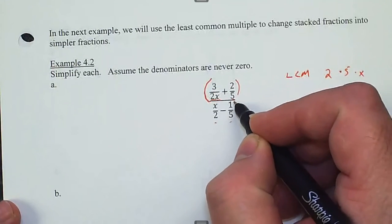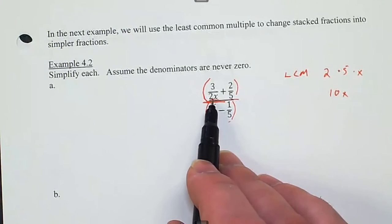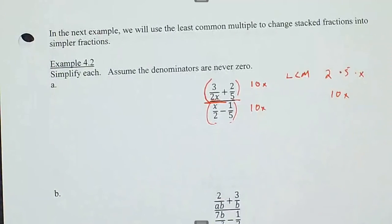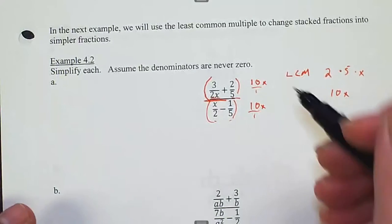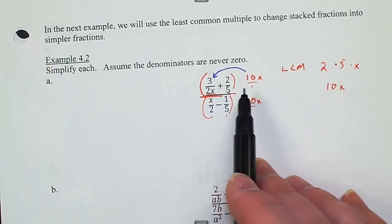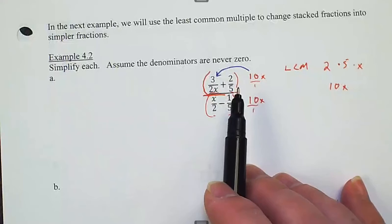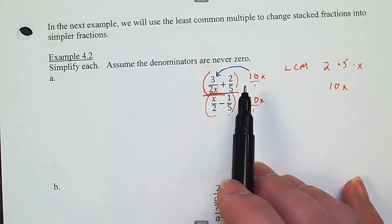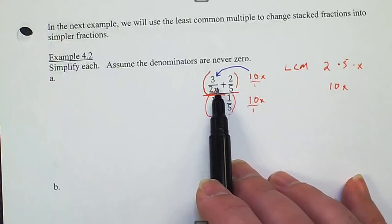We multiply the top and bottom both by 10x — essentially multiplying by 1. Distribute 10x to each term. For 10x times (3/2x): divide 10x by 2x first, which gives 5, then multiply by the numerator 3, giving 15. For 10x times (2/5): divide 10x by 5, giving 2x, then multiply by 2, giving 4x.